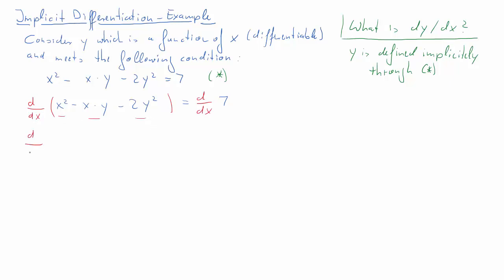The differentiation with respect to x. Now there are three summands in here. We can split this differentiation up using our standard differentiation rules into three individual differentiations. So the third term is d/dx of 2y squared, and on the right hand side we calculate the first derivative of 7 with respect to x.